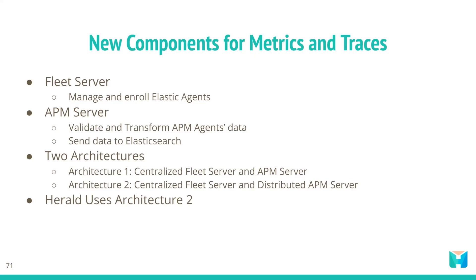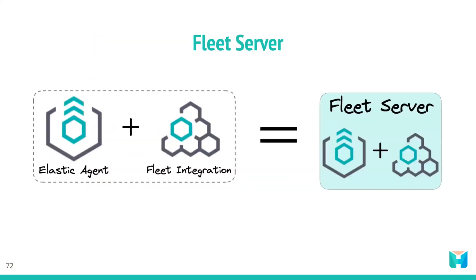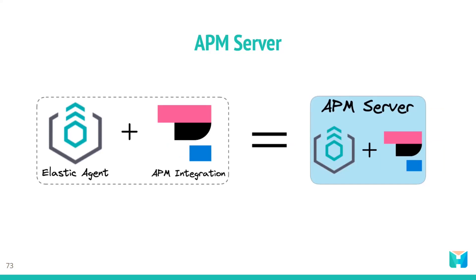There are two ways these four components can be set up for collecting traces and metrics. In the first architecture we have a centralized Fleet Server and a centralized APM Server. In the second architecture we have a centralized Fleet Server but a distributed APM Server. Herald uses architecture 2. The Fleet Server is really an Elastic Agent with a special integration installed on an EC2 instance, allowing that EC2 to act as a Fleet Server. Similarly, the APM Server is also an Elastic Agent with a special integration installed on an application server EC2, and this Elastic Agent then acts as the APM Server.